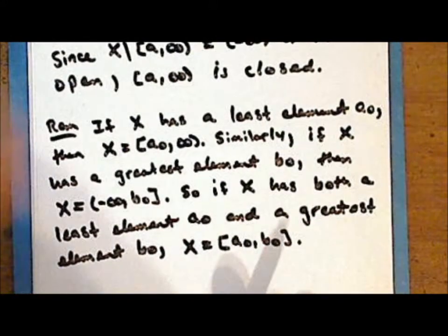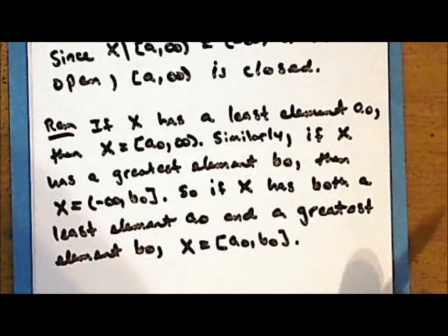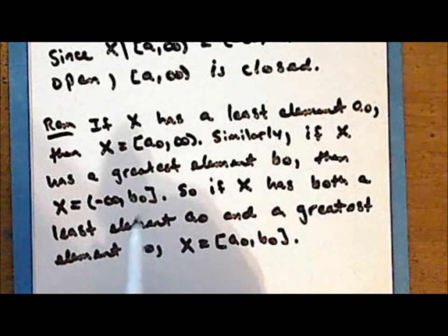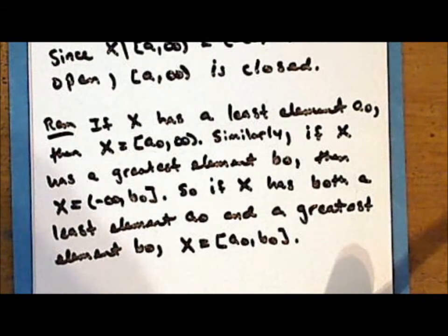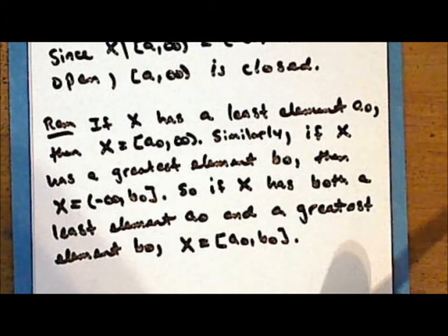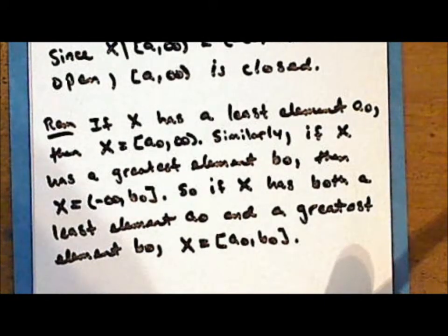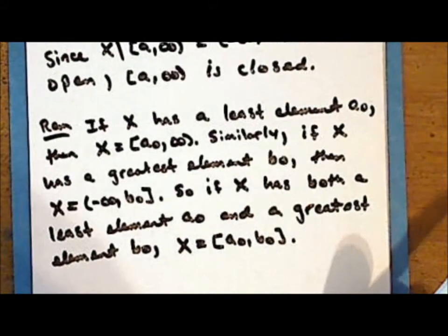Now, this brings up an important point about interval notation. In each of these cases, the intervals and the rays are considered as subsets of the underlying space X. The use of interval notation can be misleading, and so we have to be careful with its use.